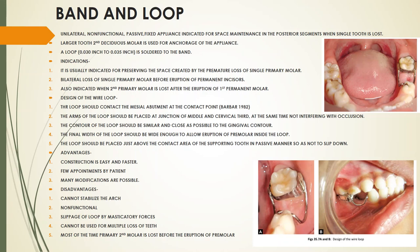The band and loop is a unilateral, non-functional, passive, fixed appliance. It is non-functional because no artificial tooth is used; passive because it exerts no pressure. It is indicated for space maintenance in the posterior segment when a single tooth is lost. The second deciduous molar is used as anchorage for the appliance.